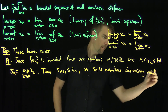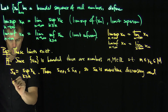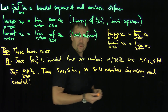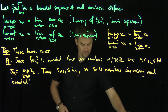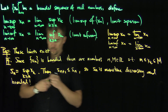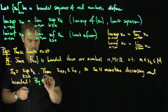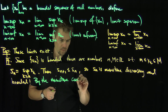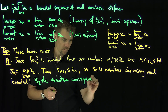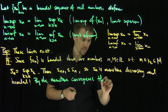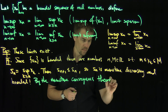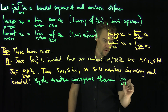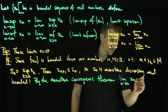And sn is bounded. So by the monotone convergence theorem, the limit as n goes to infinity of sn exists.